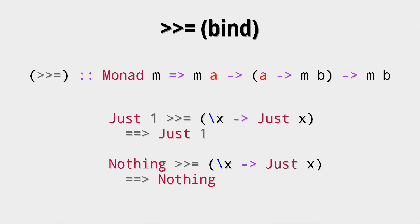Let's look at two examples with the maybes. A Just One is just what we expect: we have the internal value one, and then we have this anonymous function that gets this one as its x argument, and then just puts it back into a Just. But then the interesting thing is, a Nothing with this bind operator gets us a Nothing.